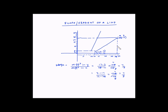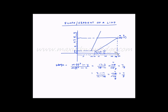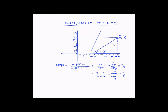Let us note down some observations for this line. This line is moving from left to right in an upward direction. So the x-coordinate is increasing because it is moving rightward, and since it is moving upward, the y-coordinate is also increasing. Both x and y at the higher point are larger than at the lower point, so the slope should always be a positive number.